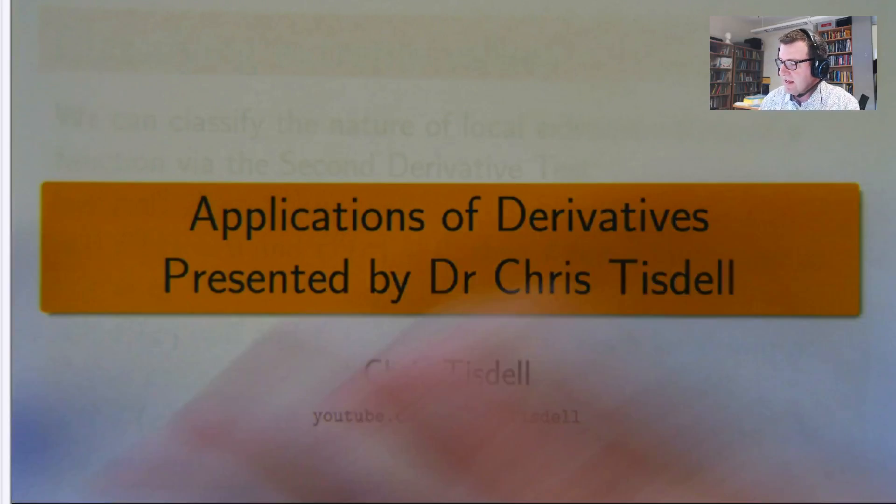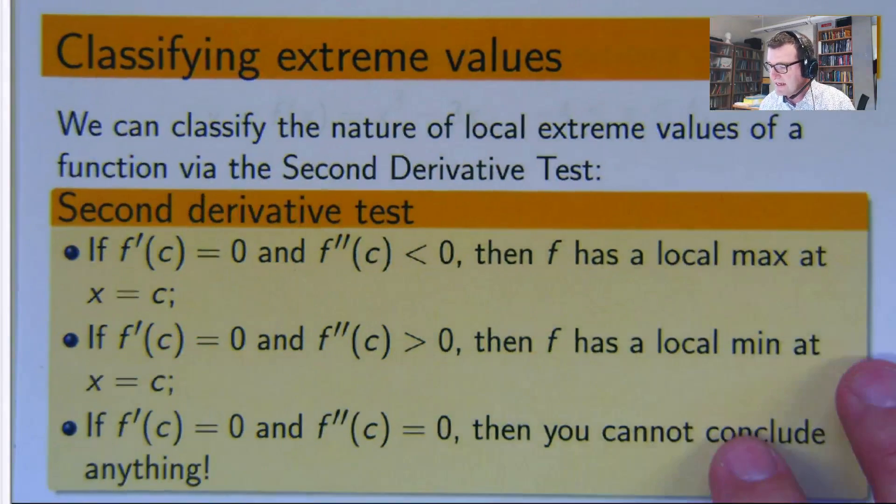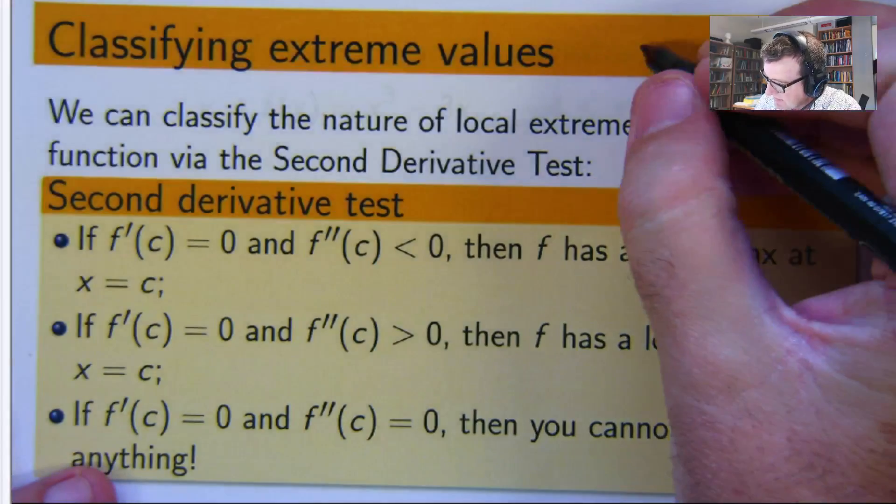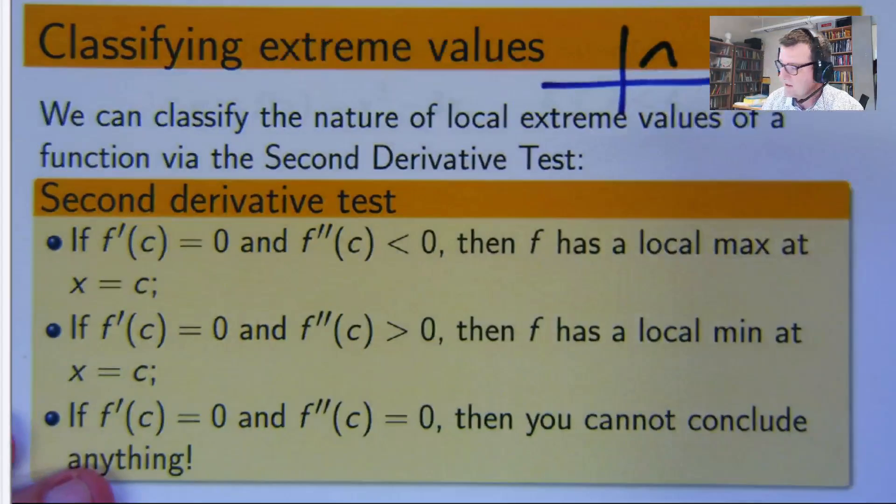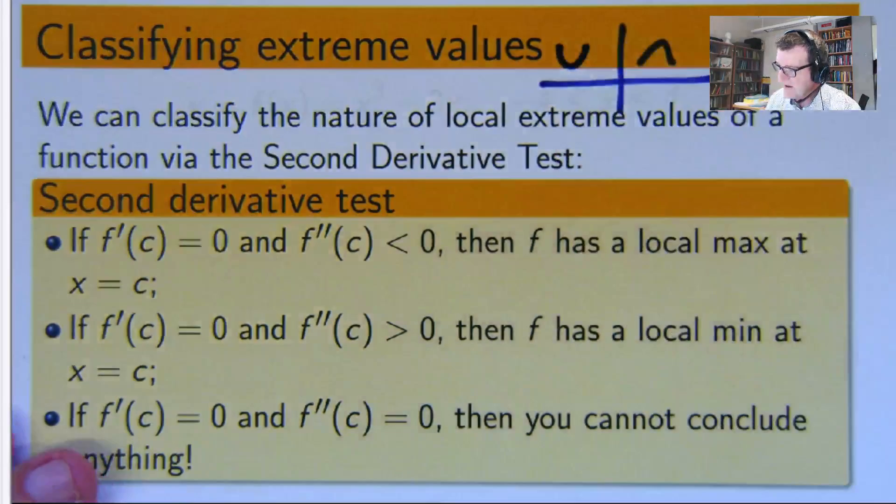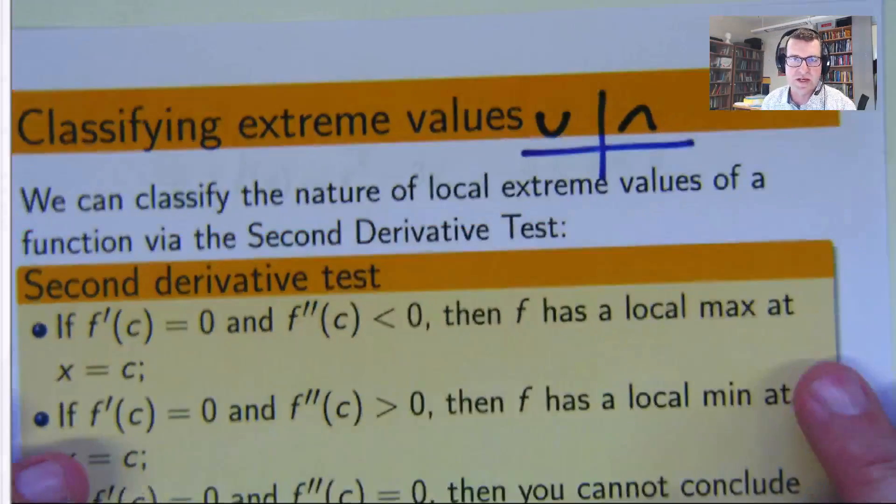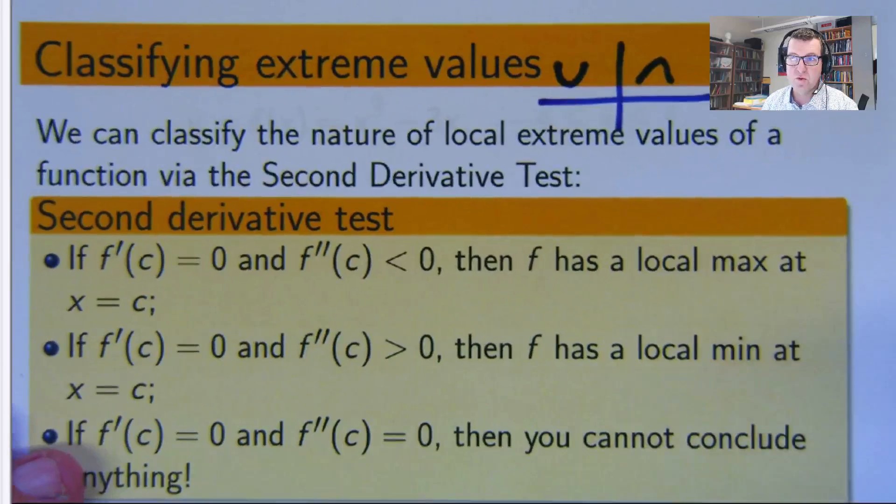I'm going to continue that with the idea of how to classify extreme values. Sometimes we've seen functions have a little peak or a mountain. Sometimes we've seen them have a little valley. How do you know which is which without drawing them?